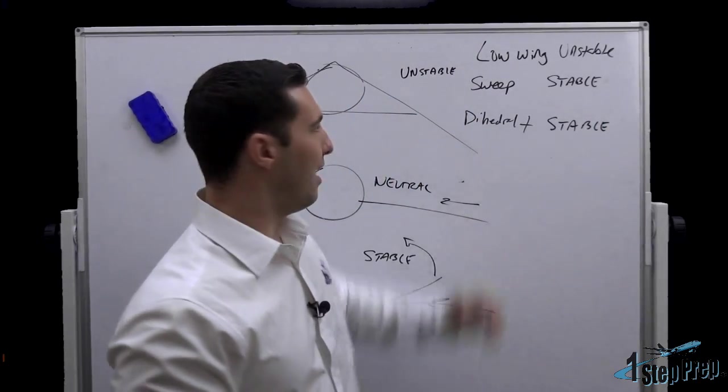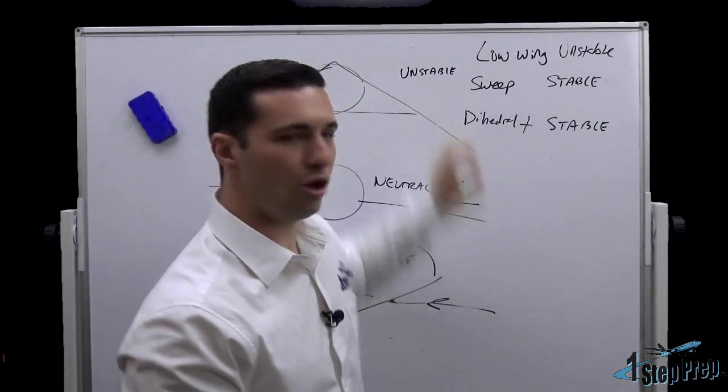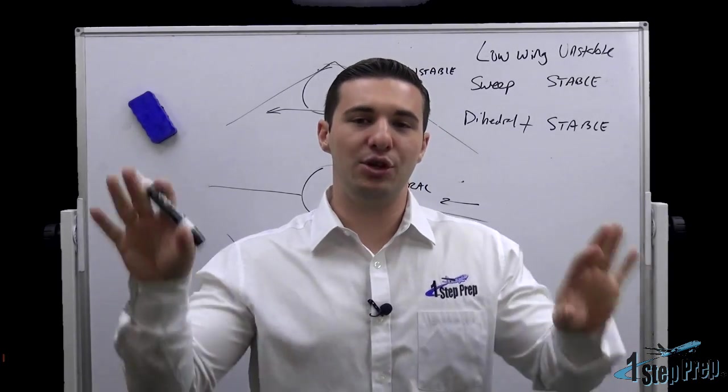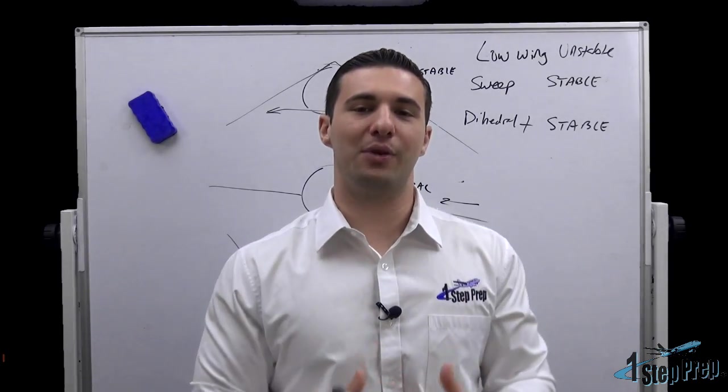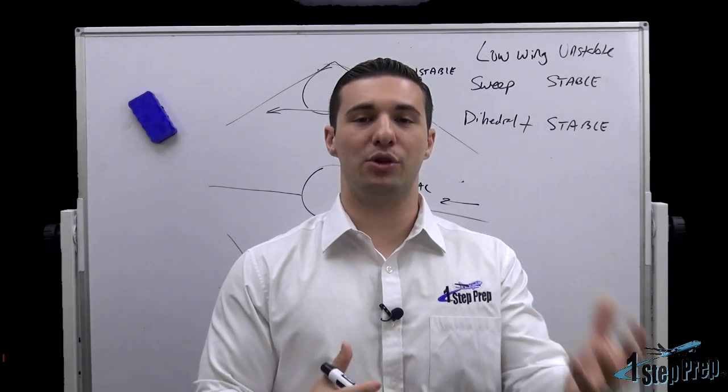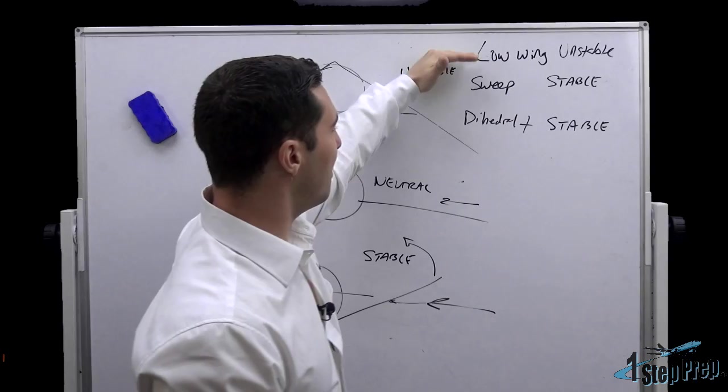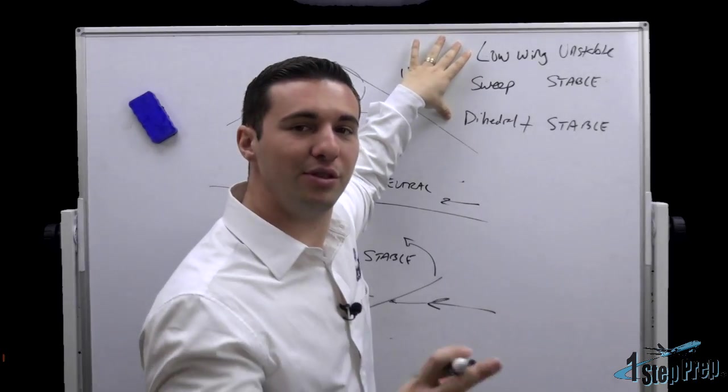And what you're going to find is that when manufacturers are determining wing placement, sweep angle, dihedral angle, they're taking into consideration that I need a good mix of controllability and still a stable platform, and they're going to manipulate these three variables to achieve that.